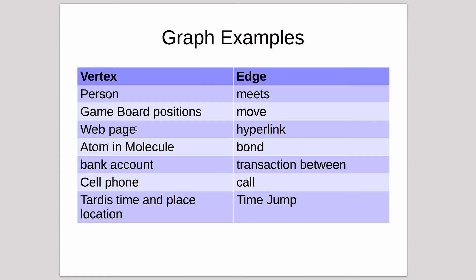Web pages: a web page could be a vertex. All the web pages on the internet, when you're on a page you have a link to another page, that's called a hyperlink, which could be the edge. A molecule is composed of atoms, so you can represent a molecule as a graph where all the atoms are vertices and the bond between two atoms is the edge. Bank accounts: you have a bunch of bank accounts and the transactions between them are the edges. Cell phones: whenever one cell phone calls another cell phone, that could be an edge.